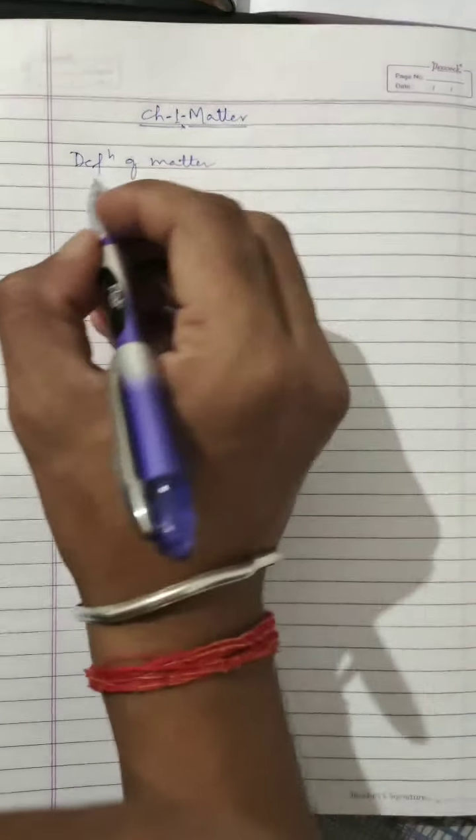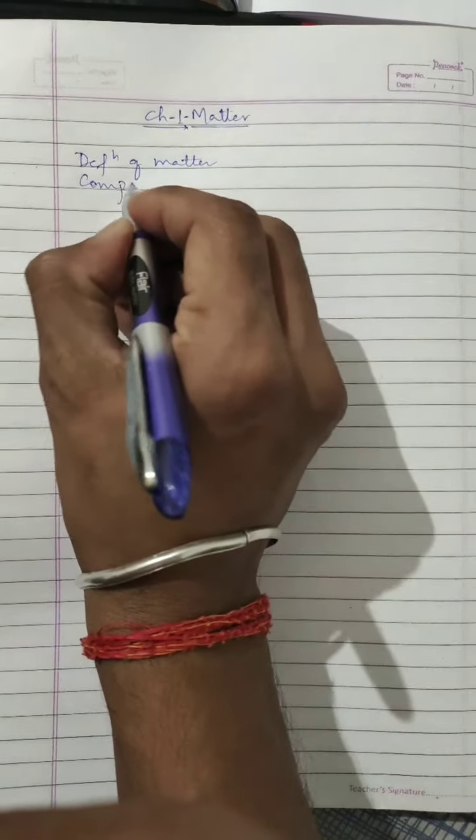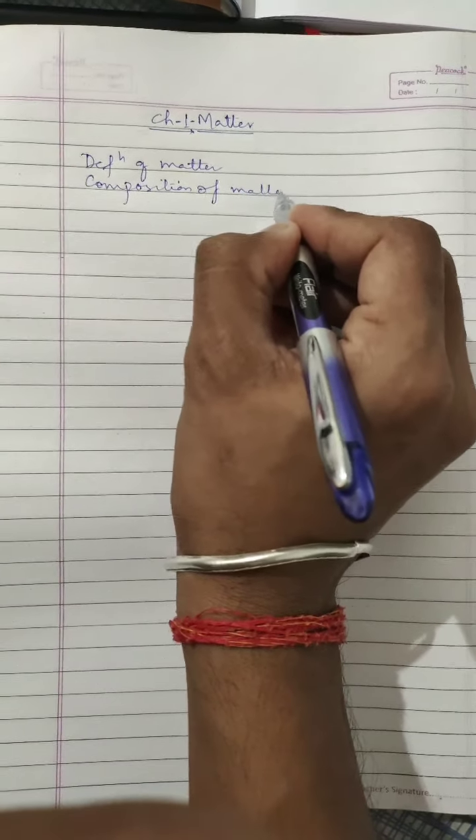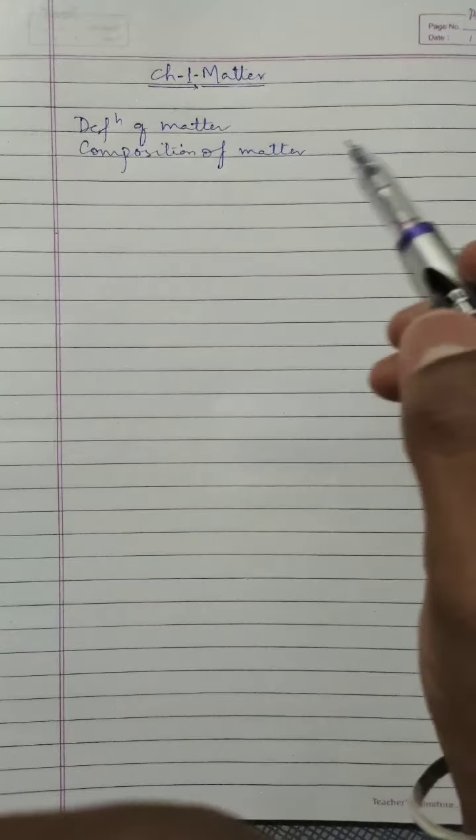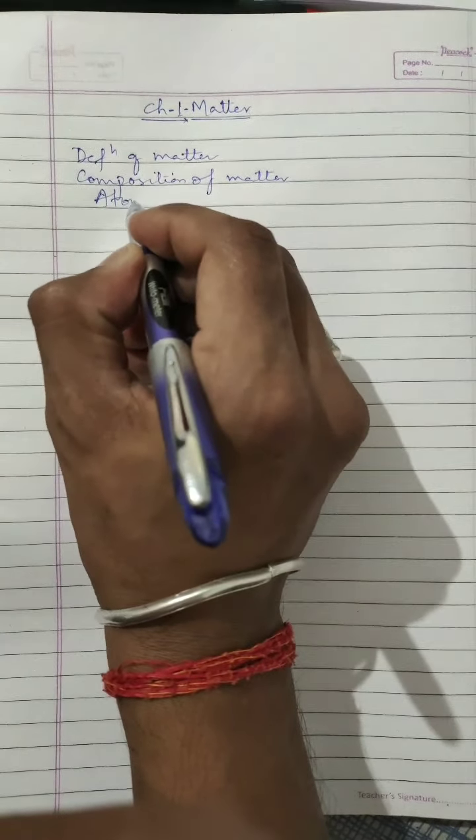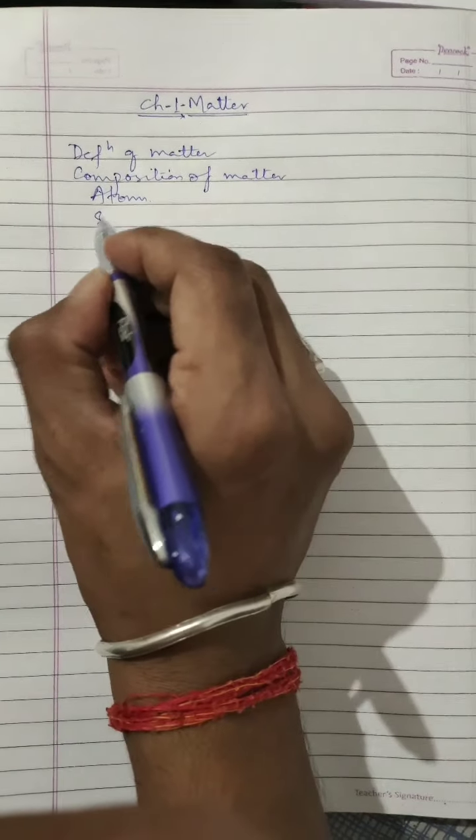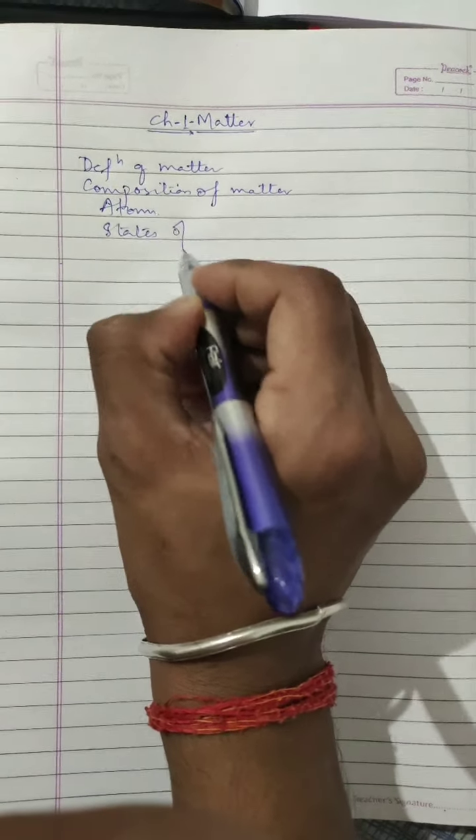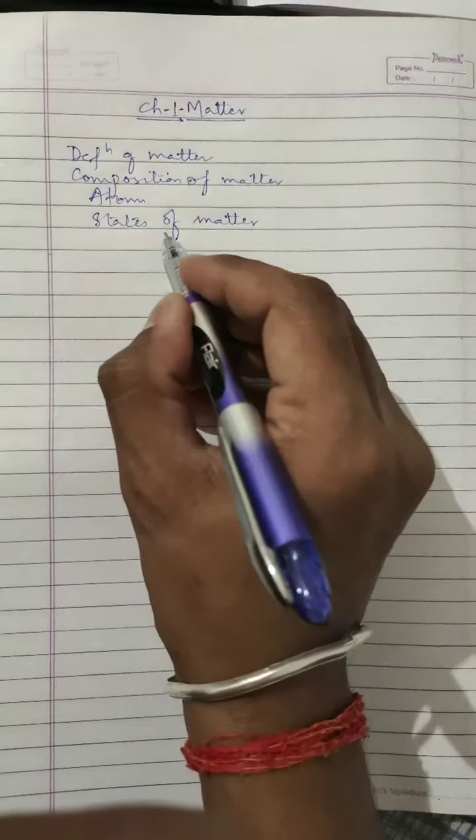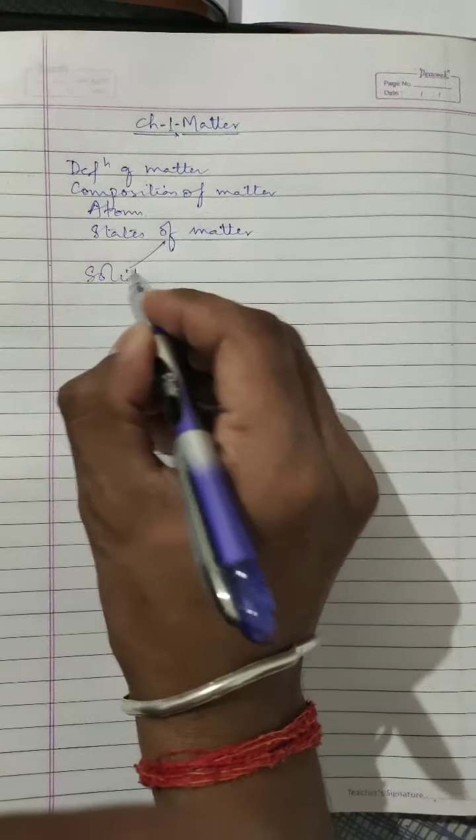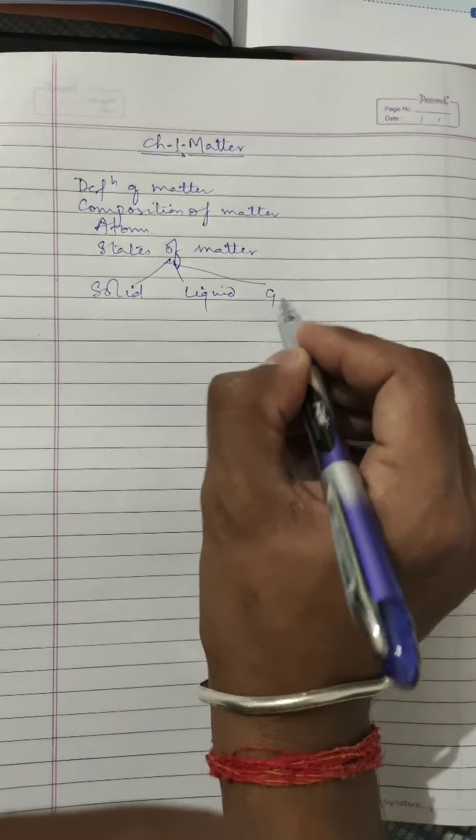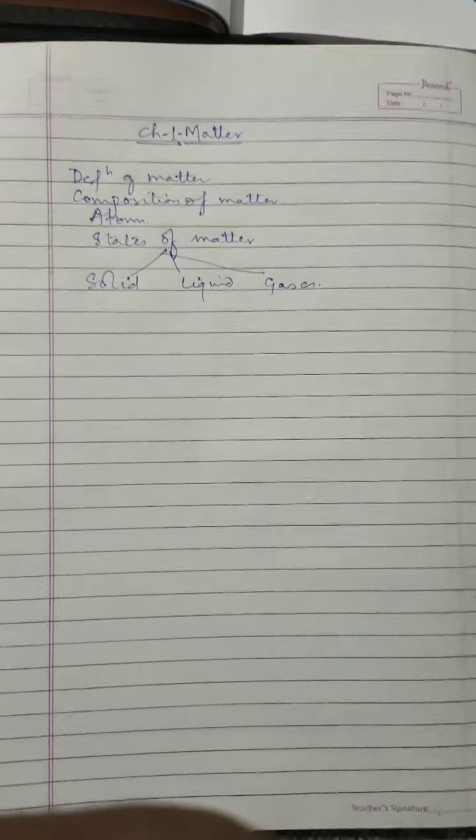We have studied about composition of matter. We have studied about atom. We have studied about states of matter - that matter has three states. All the states we have studied: solid, liquid, gas. These all three states of matter we have studied.